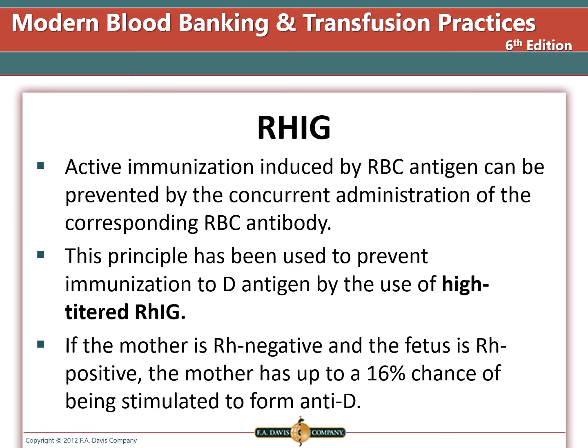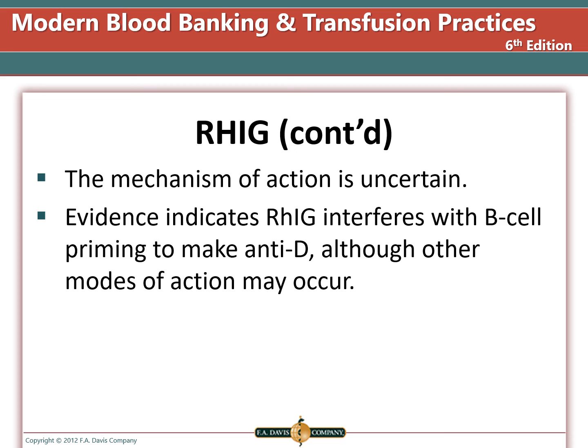Rh immune globulin (RHIG) is a prophylactic treatment designed to prevent HDFN due to anti-D in Rh-negative mothers by stopping the mother from making anti-D. If an Rh-negative mother has an Rh-positive infant, she has a 16% chance of being stimulated to form anti-D. Although the exact mechanism is uncertain, it is thought that RHIG — a passive form of anti-D — coats fetal cells in the mother so the spleen removes them before the immune system can make an antibody to them. Evidence also indicates RHIG interferes with B-cell priming. This is highly effective, allowing Rh-negative mothers to have multiple Rh-positive babies without making anti-D.